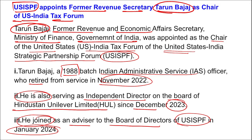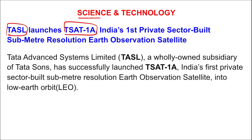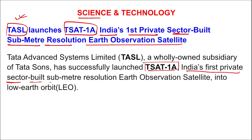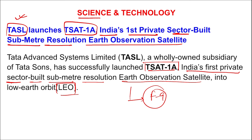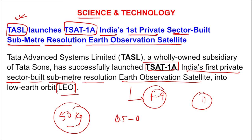In science and technology: TASL — Tata Advanced Systems Limited — launched T-SAT 1A, India's first private sector-built sub-meter resolution earth observation satellite, into low earth orbit. It was launched using SpaceX's Falcon 9 rocket from Kennedy Space Center, Florida, USA on 7th April. It is one of the 11 satellites launched as part of SpaceX's Bandwagon-1 mission. T-SAT 1A weighs around 50 kg, has a resolution of 0.5 to 0.8 meters, which will be enhanced to 0.6 meter super-resolution using software.